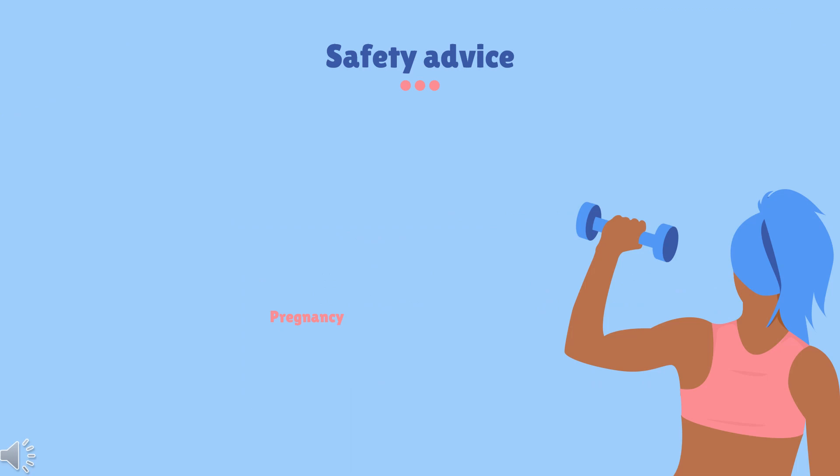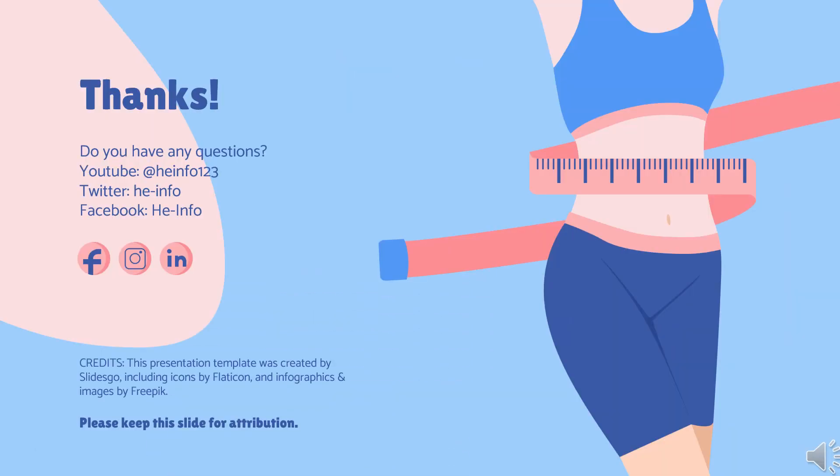Safety Advice: Orlistat is contraindicated in pregnancy. It is a former FDA pregnancy category X drug. That's all the information about Orlistat we collected. Thanks for listening. Do not forget to like, share, and subscribe to the HeInfo channel if you like this video, to get more health information.